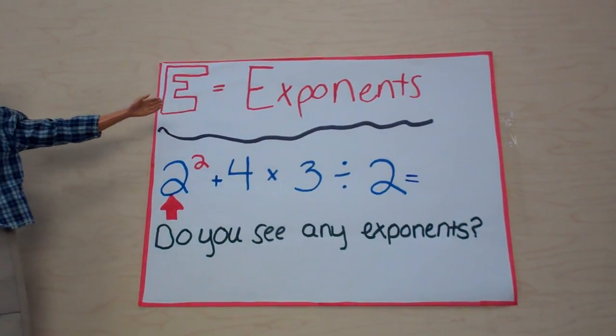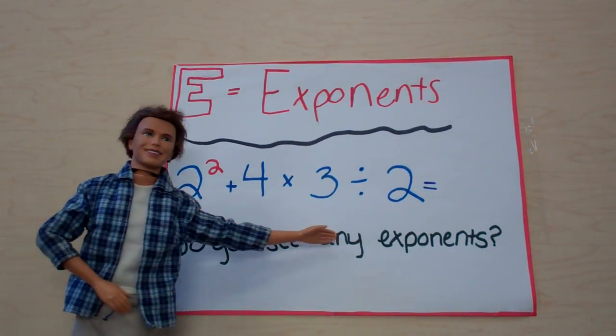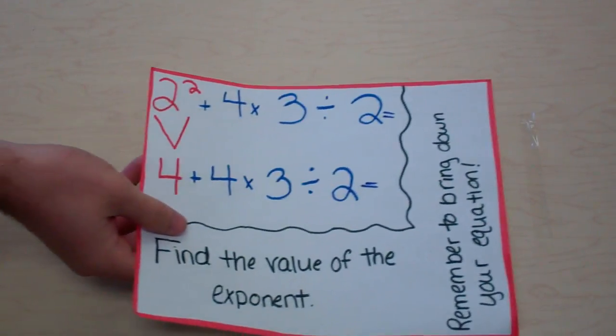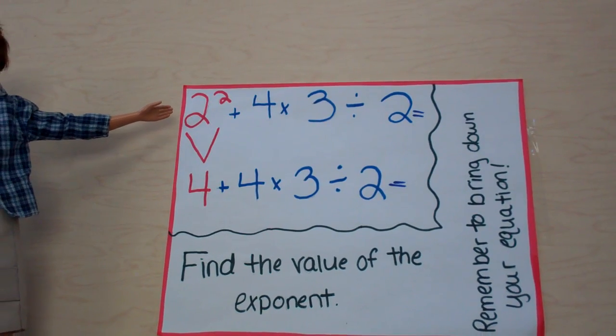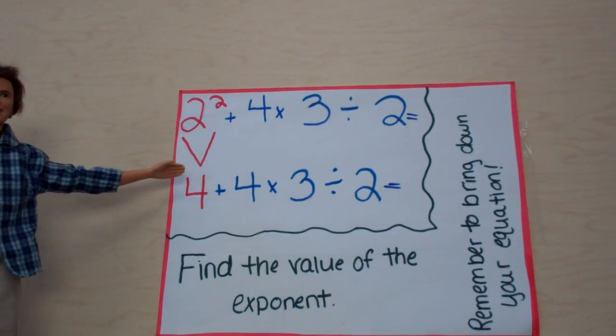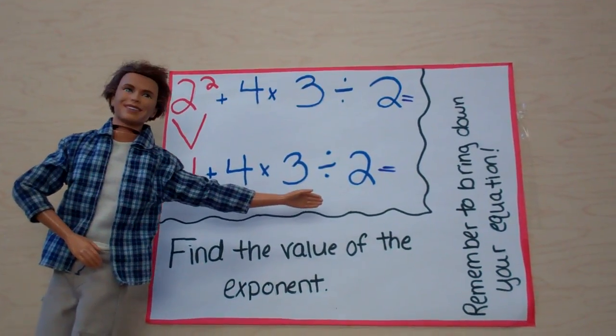E is for exponents. Do you see any exponents? Find the value of the exponent. 2 to the second power is 4. Remember to bring down your equation.